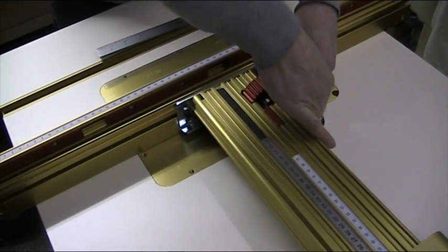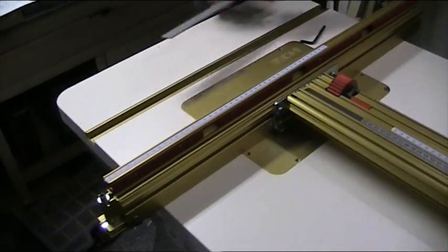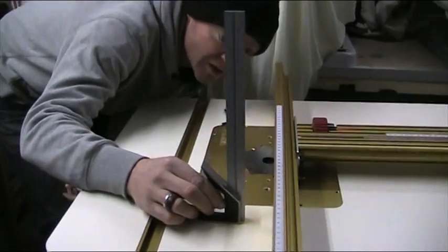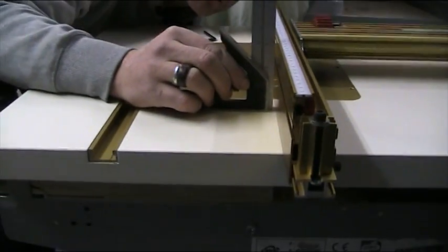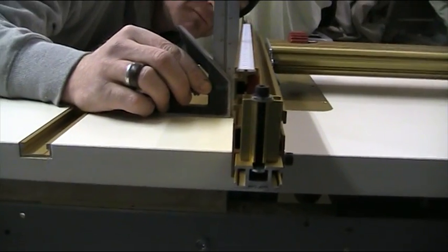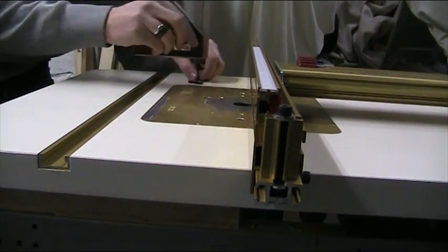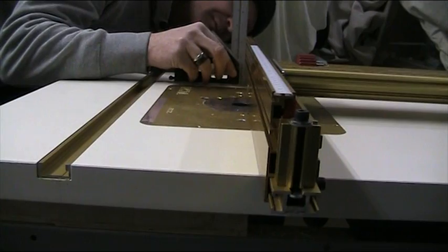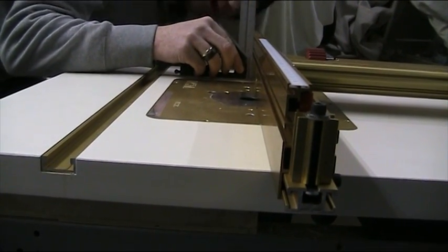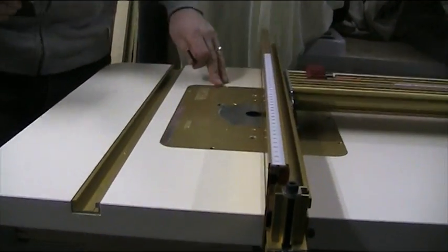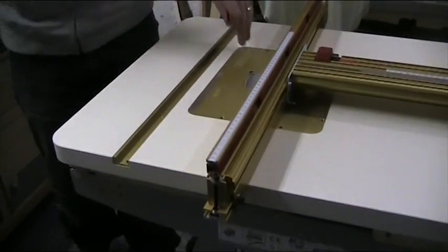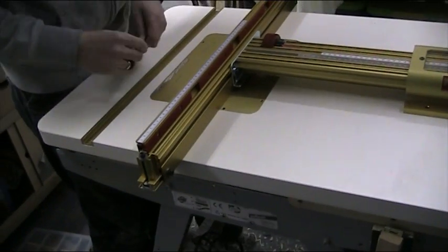Okay, so now we make another check. This is with one shim added, and that is spot on. Check the other side. Okay, so on this table, one shim, one plastic shim is enough to make it exactly 90 degrees.